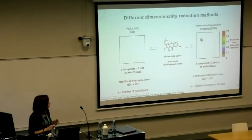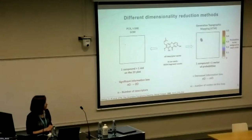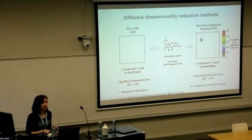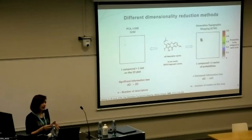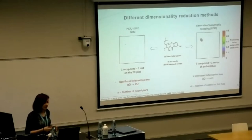Most tools that visualize chemical space work with descriptor-based dimensional spaces: you represent a molecule as a vector, then have a high-dimensional chemical space and reduce dimensionality using methods like PCA or t-SNE. These methods represent a molecule as a single dot, causing significant information loss going from N dimensions to just 2D x and y axes.